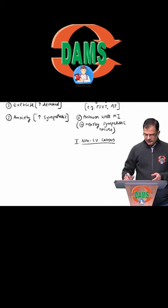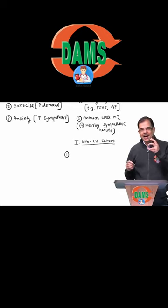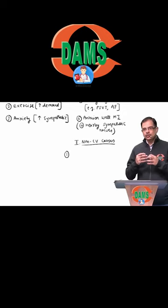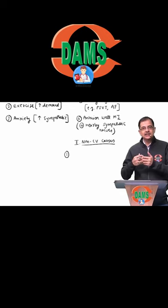Among non-cardiovascular causes, the number one is thyroid hormone. There is a physiological link: thyroid hormone increases the number as well as the function of beta receptors — specifically beta-1 receptors — which are present on the heart.